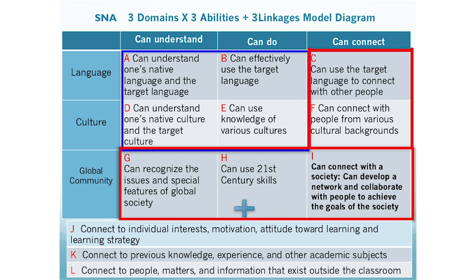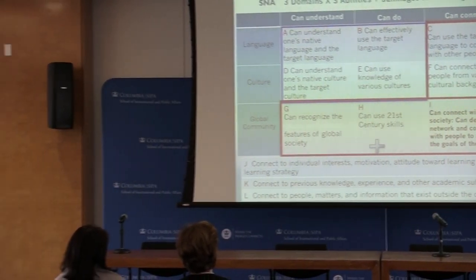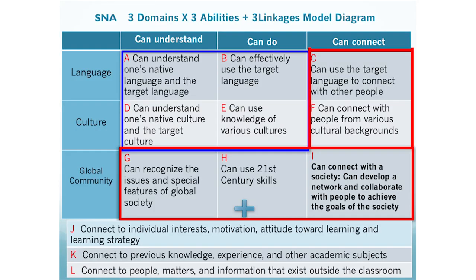I would like to look into the details of how we implemented our project based on each of these categories, but today due to time restriction I will primarily refocus on Ability I. Ability I is defined as the ability to develop a connection between the self and society — from one's local community to broader communities such as regional areas or countries — the ability to feel responsible as a member of society, and to be actively involved in creating a better society through connecting with people, materials, and information. In other words, the ability to develop a network and collaborate with people to achieve the goals of society. In order for students to do that, they need to recognize issues and social features of global society using skills described in G and H, and connect with people using the language described in C and F.